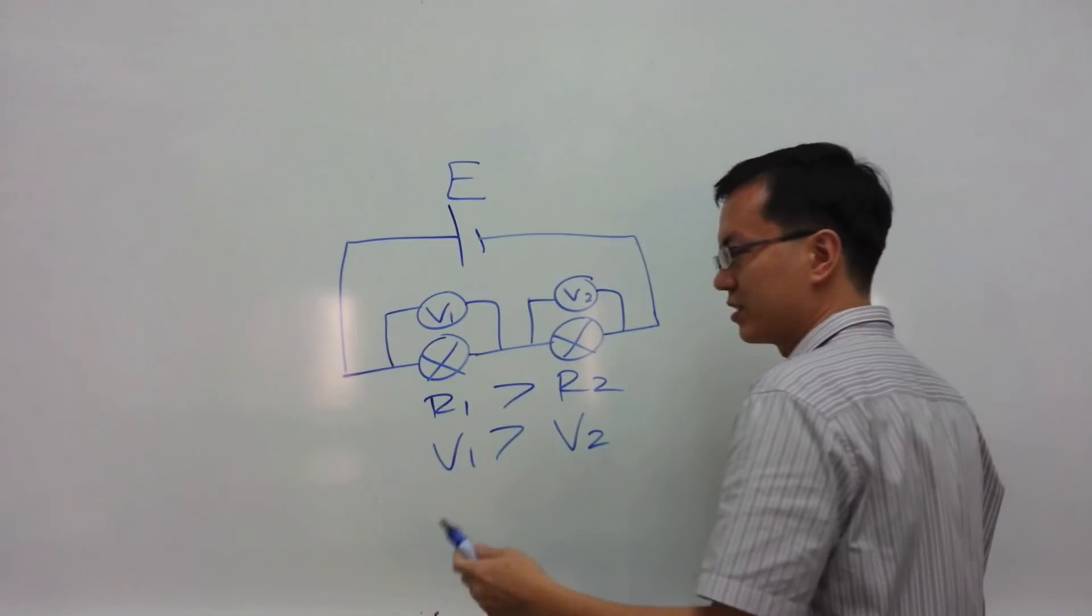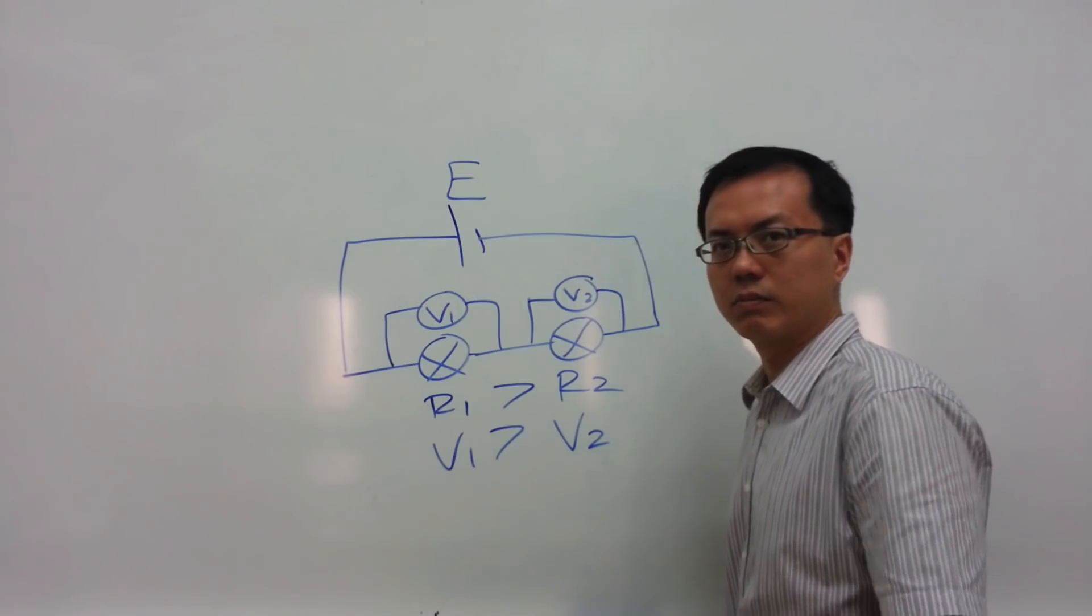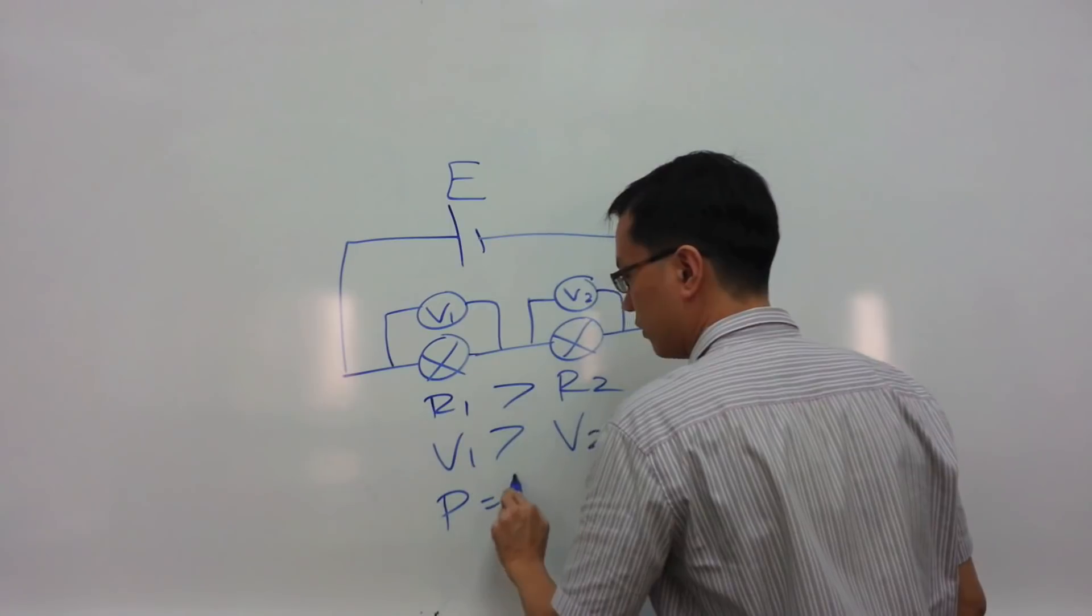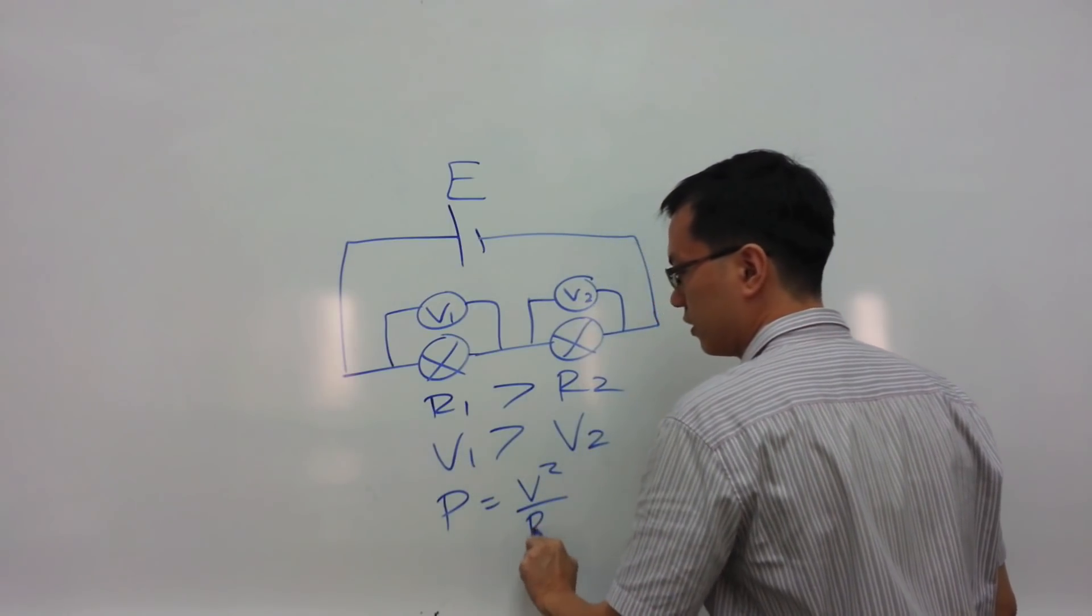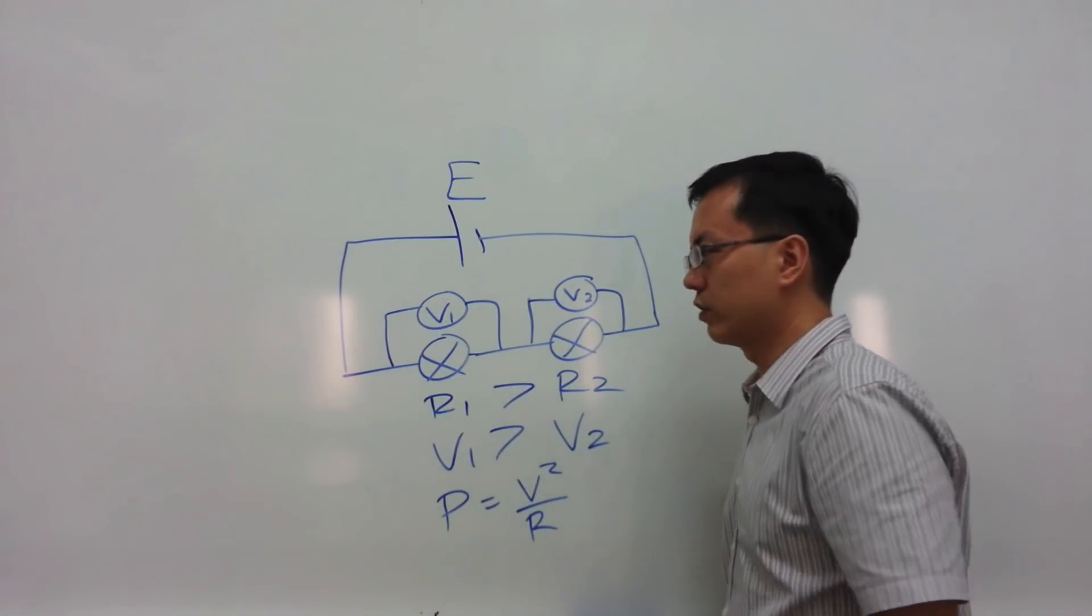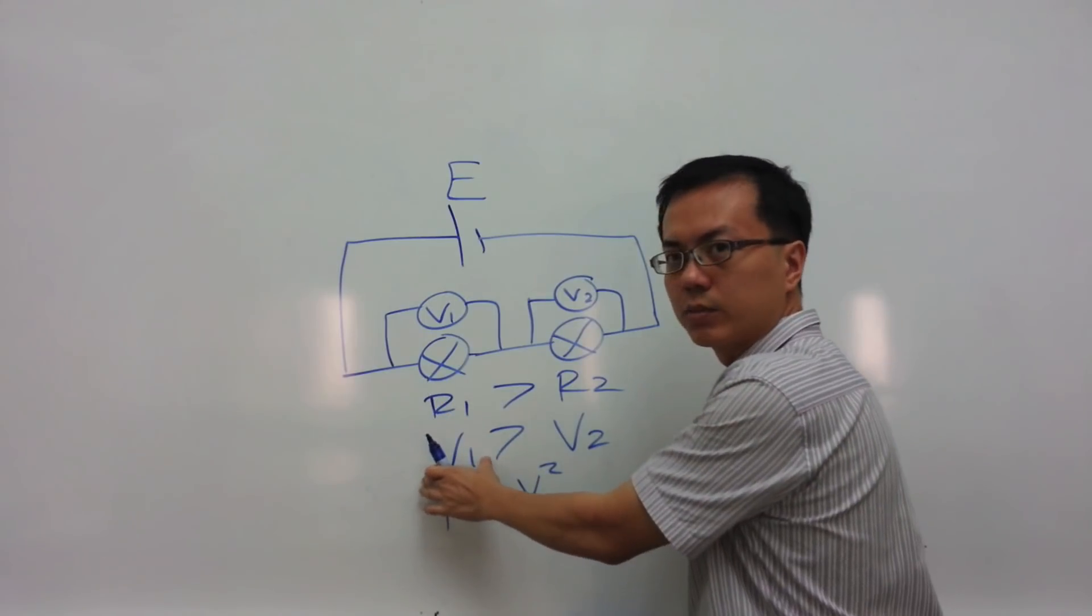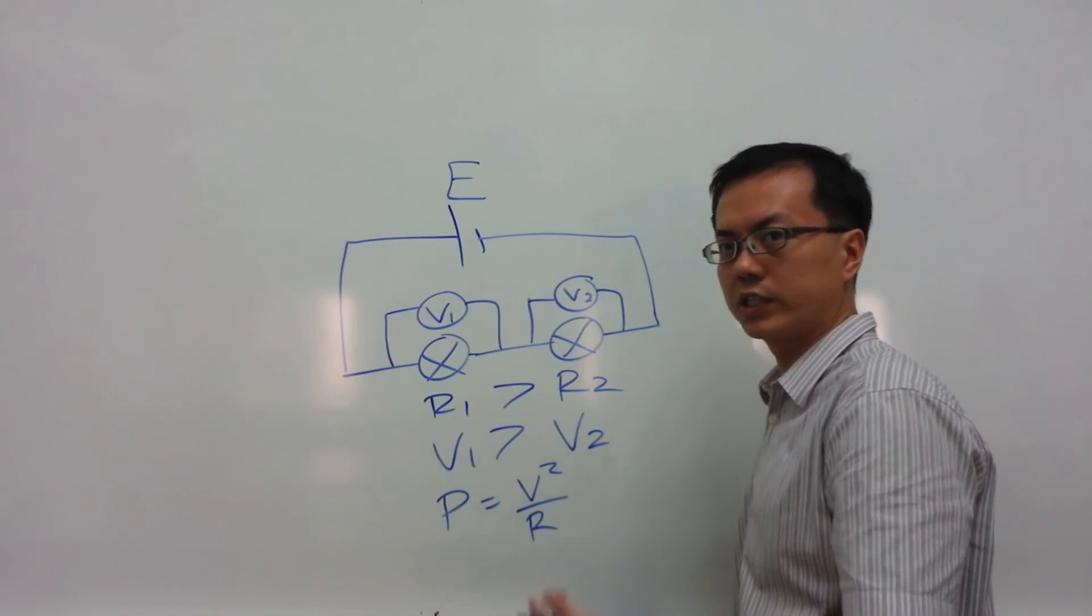And since the power dissipated within a light bulb is given by B2 over R, this light bulb on the left with its greater resistance and a greater potential difference will be brighter.